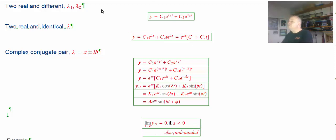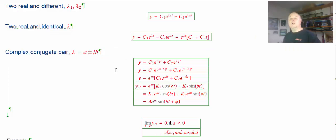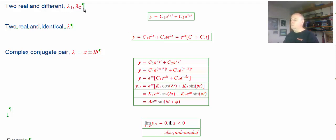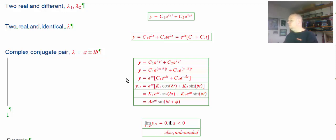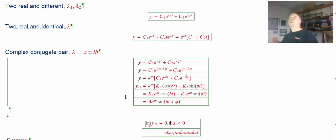What happens to the sin(bt)? It just oscillates up and down. Those pieces oscillate up and down, but they're dragged down to zero by e^(At) going to zero. Long story short: if the real part of the eigenvalue is negative, the homogeneous solution goes to zero. That's the rule for all three cases — if the real part of both eigenvalues is negative. If they're both real, it's all real part. If complex conjugate, it's the real part that determines it. Otherwise, the solution goes off to ±∞, or in the complex conjugate case, it oscillates off to infinity.